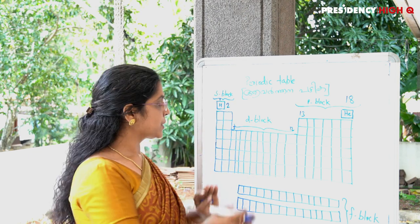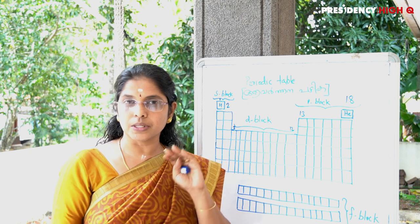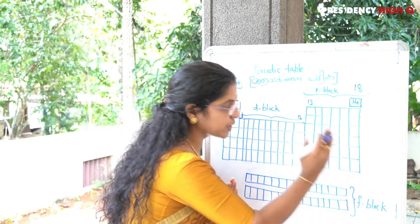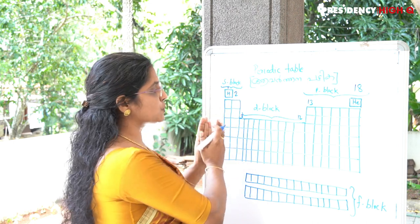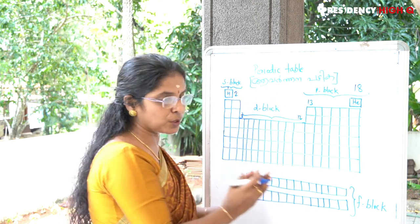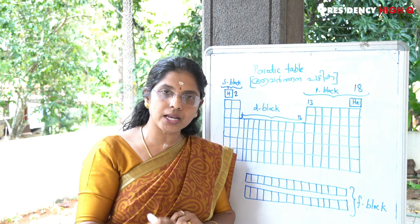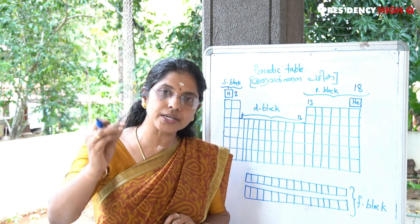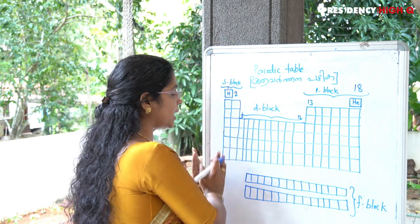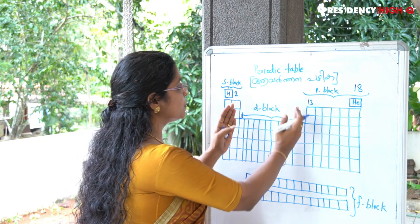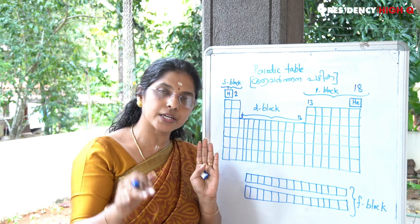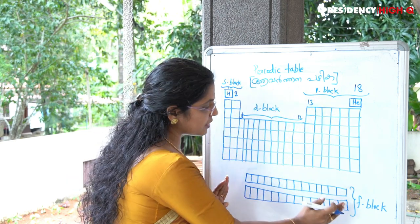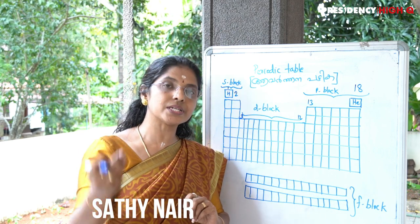The two series placed at the bottom of the periodic table — the first series (lanthanides) and second series (actinides) — are together known as the f-block elements. So s-block: groups 1-2; d-block: groups 3-12; p-block: groups 13-18; f-block: bottom two rows.